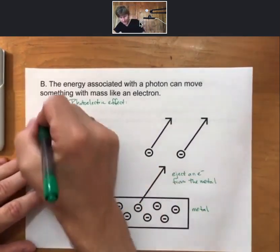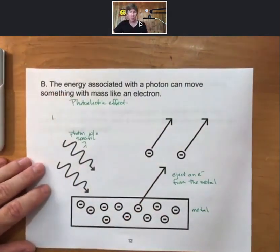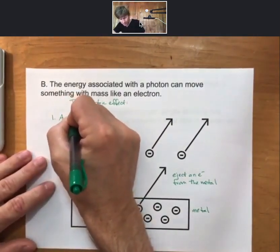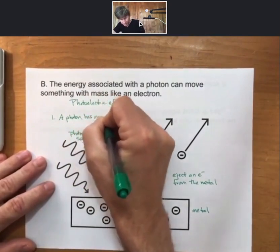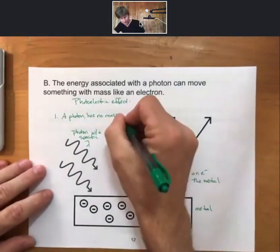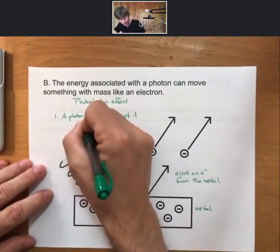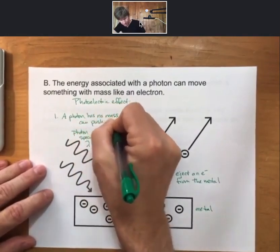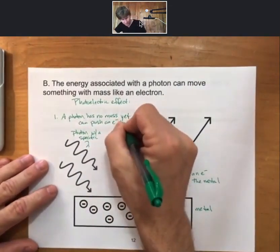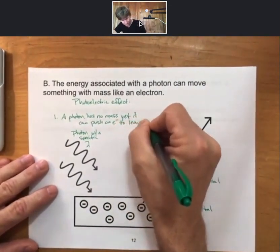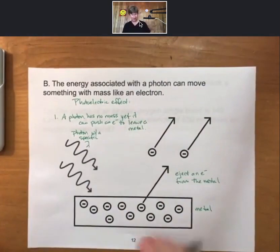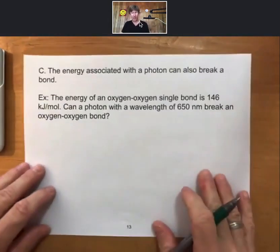And a couple things about this. So photoelectric effect is this picture here. We'll call this one. So a photon has no mass, yet it can push something. And in this case, it can push an electron to leave a metal. So this is a photon's particle-like property. As such, the energy associated with a photon can also break a bond.